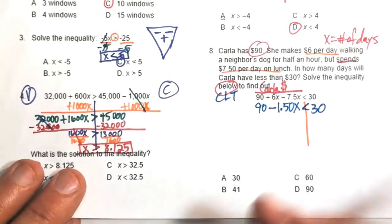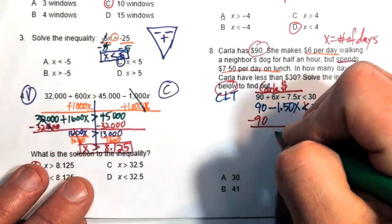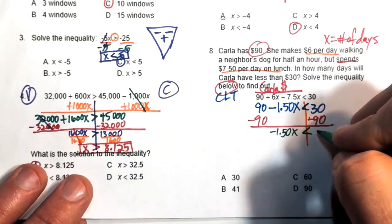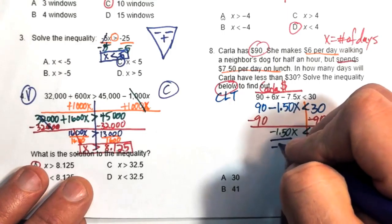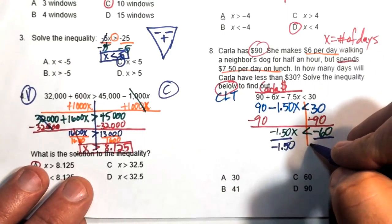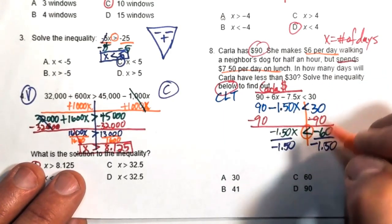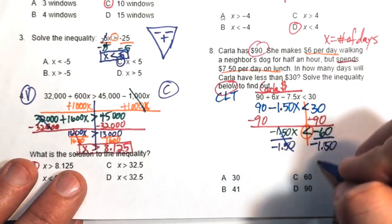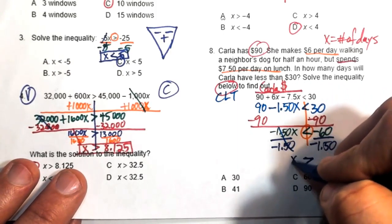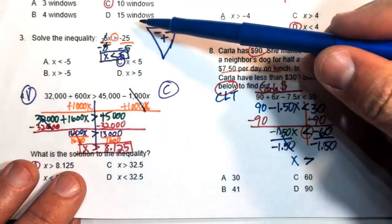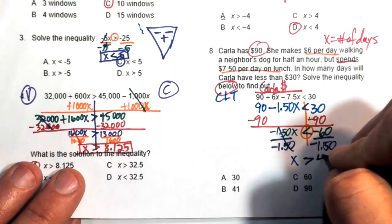Move 90 to the other side: negative 1.5x less than 30 minus 90, which is negative 60. Now divide both sides by negative 1.5 — the bells and whistles go off because we're dividing by a negative, so we flip the inequality sign. Negative 1.5 divided by negative 1.5 is 1, and negative divided by negative is positive. 60 divided by 1.50 equals 40.